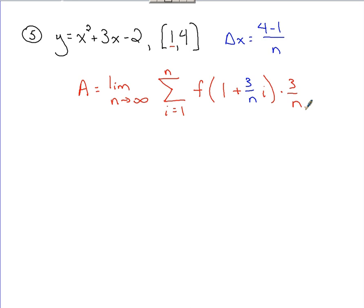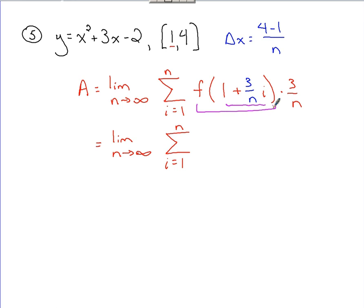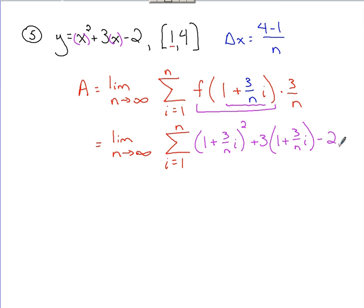Now for a few steps we're going to do some algebra, starting with this piece. To find f(1 + 3i/n), we plug (1 + 3i/n) back into the function for x. So we'll have (1 + 3i/n) squared, plus 3 times (1 + 3i/n), minus 2. That spells out the function, replacing all x values with (1 + 3i/n). We still need to remember we're multiplying on the 3/n at the end.